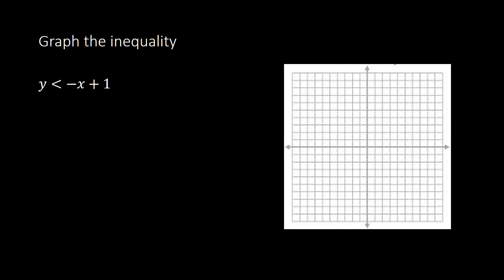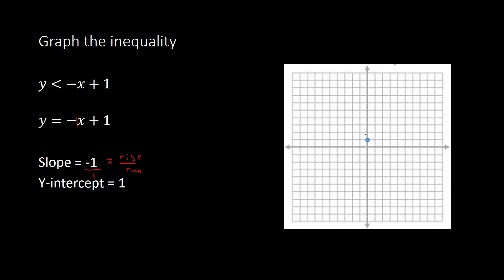For example, here we have y is less than negative x plus 1. When you begin graphing an inequality, you start the same way as graphing an equation. We know how to graph y equals negative x plus 1, because negative 1 is your slope — that's the number with the x — and your y-intercept is 1. Because the y-intercept is 1, I go up 1 to find one point. The slope is negative 1, which is negative 1 over 1 as rise over run, so the rise is negative 1 — down 1 — and the run is positive 1 — to the right 1.